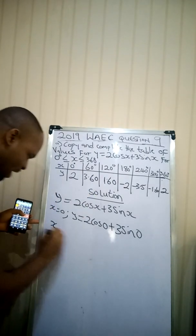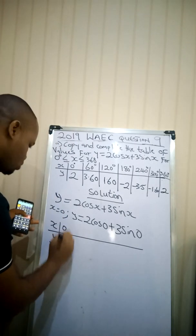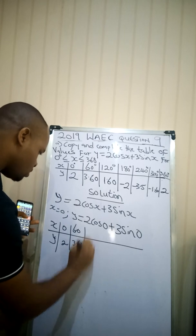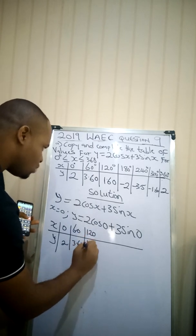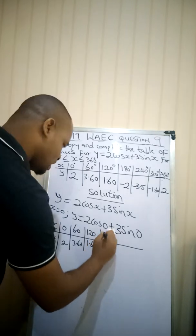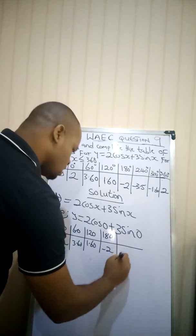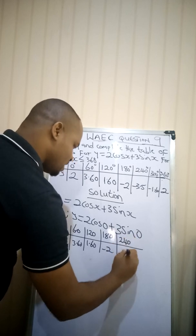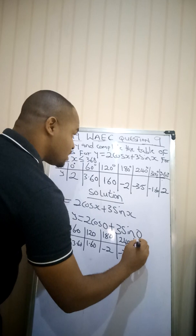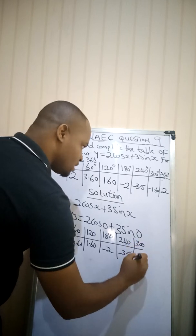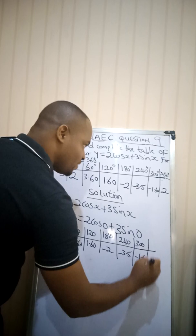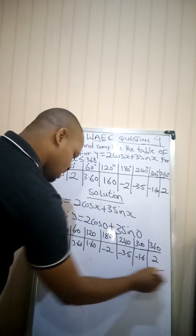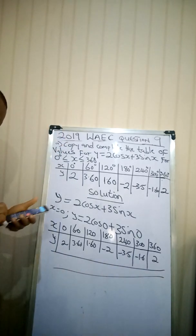So my x, my y, you just complete the table. When x is 0, y is 2. When x is 60, y is 3.60. When x is 120, y is 1.60. When x is 180, y is negative 2. When x is 240, y is negative 3.5. And when x is 300, y is negative 1.6. And then finally when x is 360, y is 2. So we've completed the table that was what they asked us to complete.